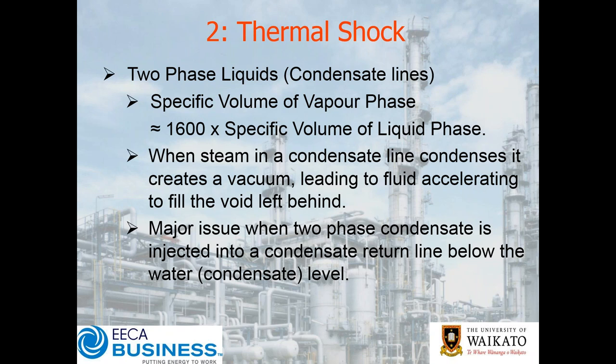In a condensate system, the specific volume of the vapor phase — when that condensate flashes off back into the vapor phase — is about 1,600 times the volume of the liquid phase. The actual number varies depending on pressure, but by and large it's over three orders of magnitude — that's a very big change. To put this in perspective: one litre of condensate flashes into 1.6 cubic metres of steam or vapor.